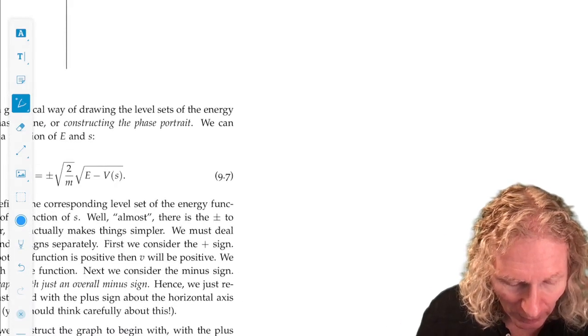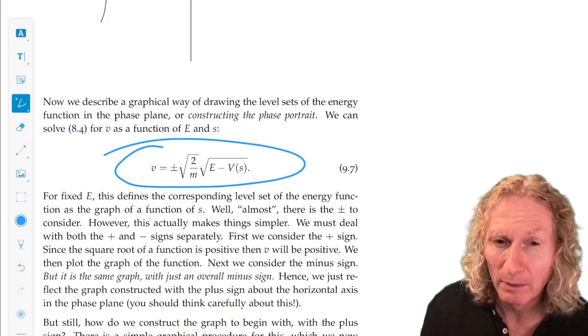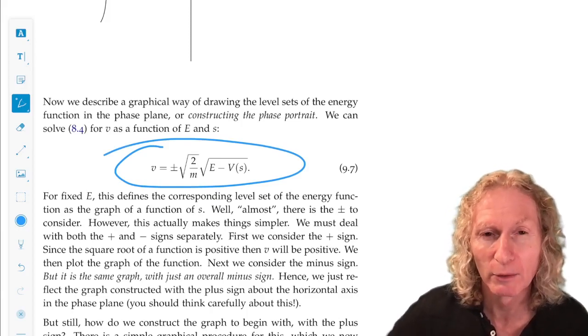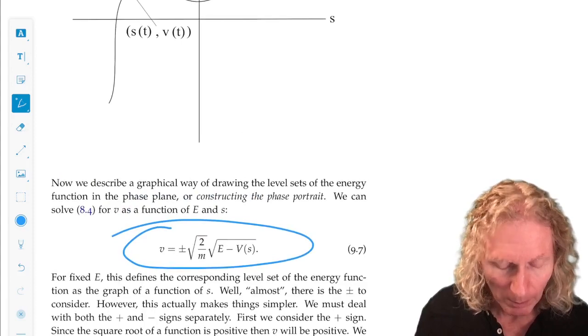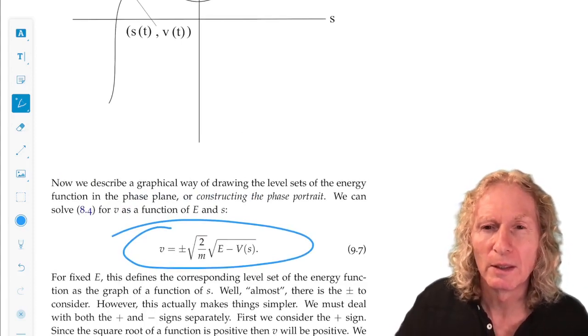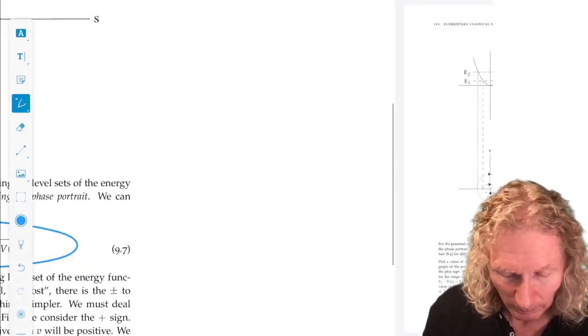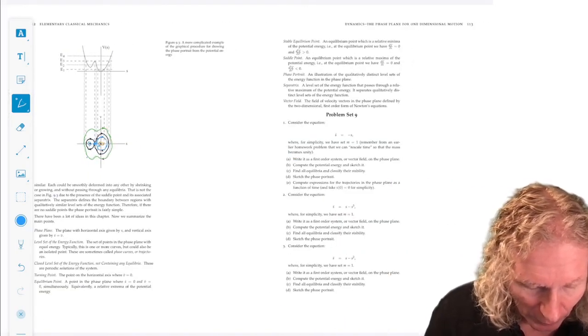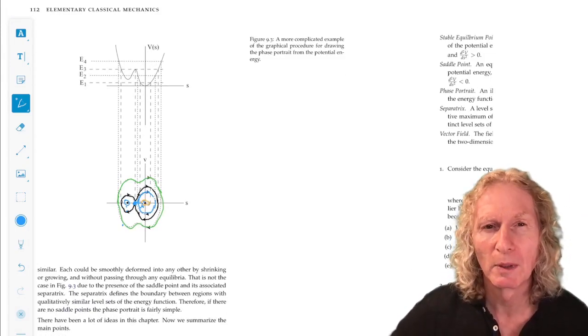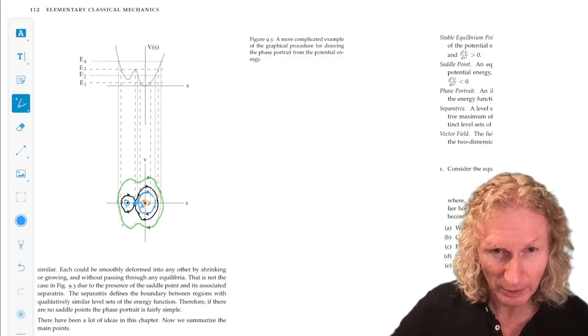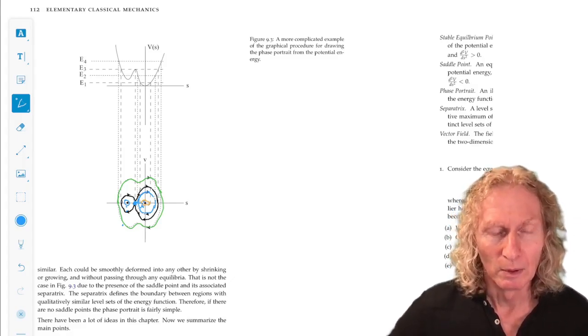Then we develop this graphical method based on solving for the velocity to plot the level sets of Newton's equation based on the geometry of the potential. So the fact that there are critical points, local minimum, local maximum, that tells us where to set our energy to find the qualitatively distinct level curves.